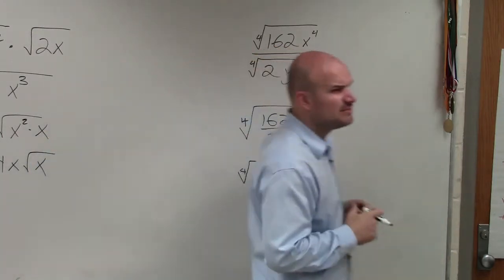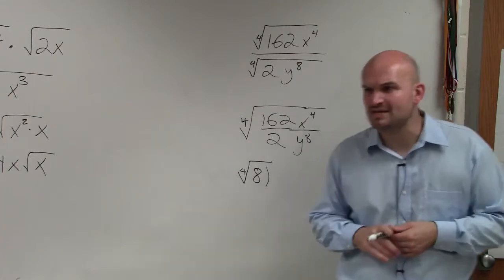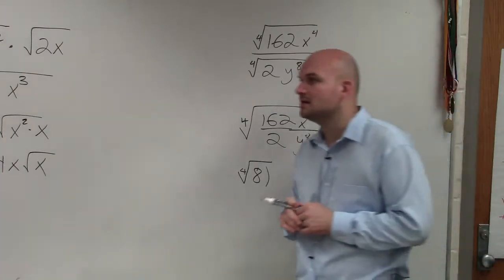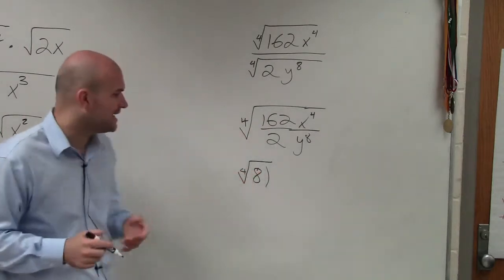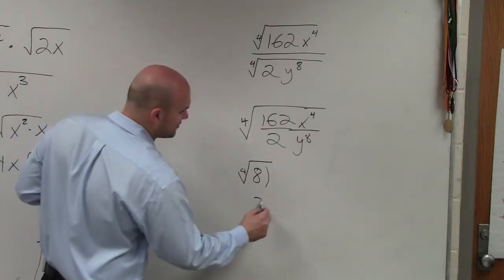Then I want to be able to determine, is there a number that I know that multiplied by itself 4 times would give me 81? 3. 3 times 3 is 9, times 3 is 27, times 3 again is going to be 81. So this is going to be 3.